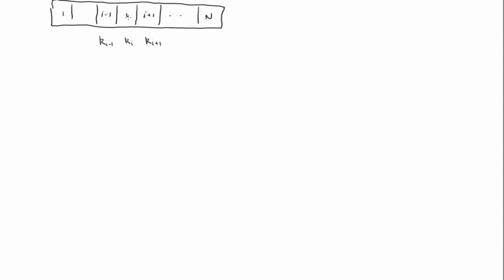If we want to compute the flux between the I+1 and the I-th grid blocks, let's write down what the flux is right at the boundary — right at the I+1/2 boundary. We'd have K_{i+1/2} times the area divided by mu. We're going to assume everything but the permeability is just a constant, and rewrite the equation in terms of the pressure difference.